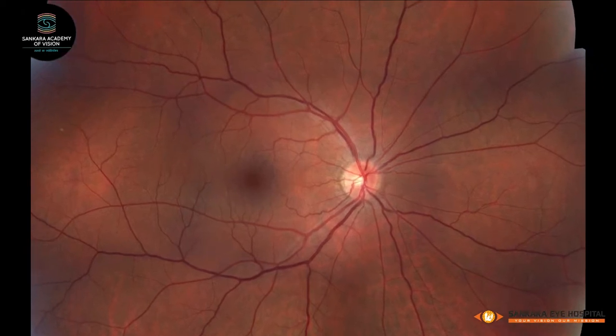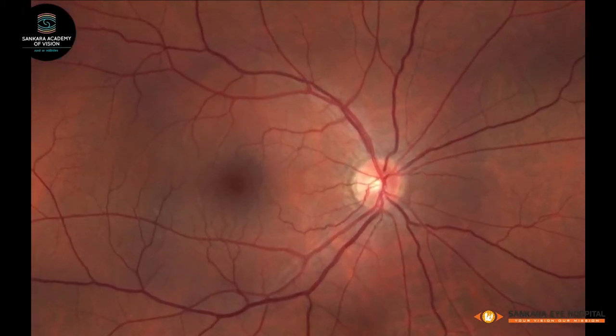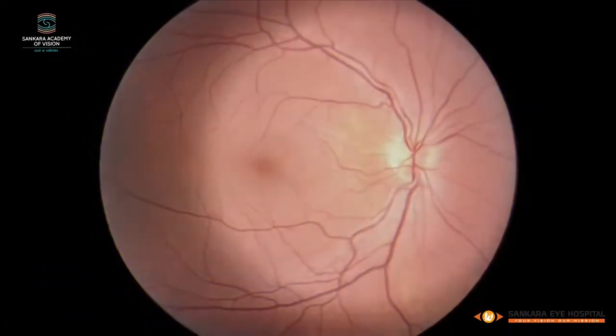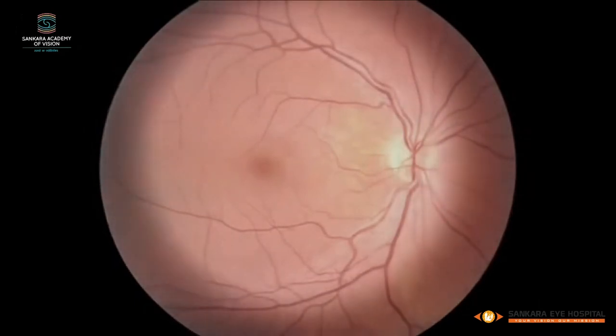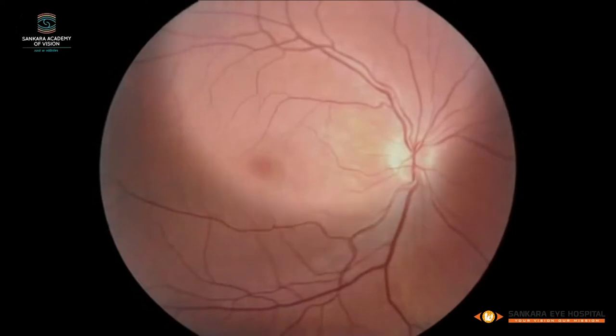The technique of examining the fundus of the eye is called ophthalmoscopy. Although there are several types of ophthalmoscopy, in this video we will learn to perform binocular indirect ophthalmoscopy.